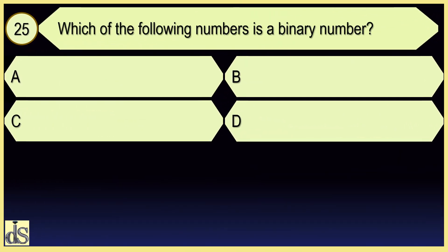Which of the following numbers is a binary number? Zero and one.